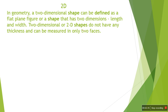Two-dimensional shapes are also called 2D shapes. In geometry, a two-dimensional shape can be defined as a flat plane figure or a shape that has two dimensions — length and width. 2D shapes do not have any thickness and can be measured in only two dimensions. So in 2D shapes, we find only two dimensions: length and width.